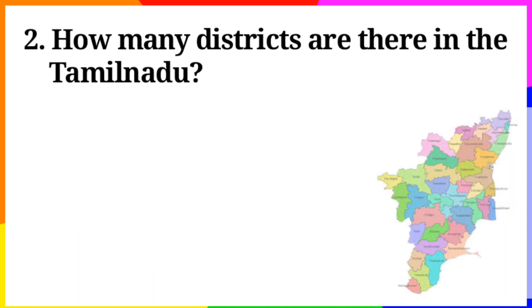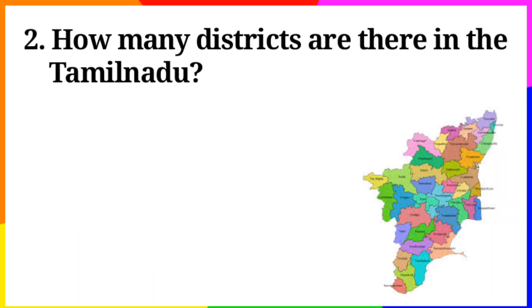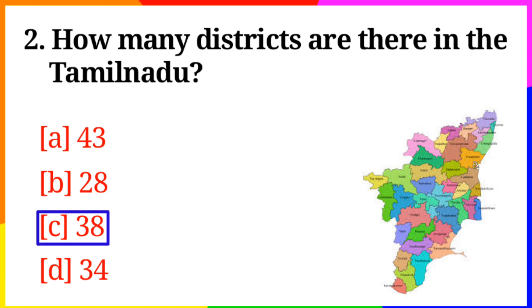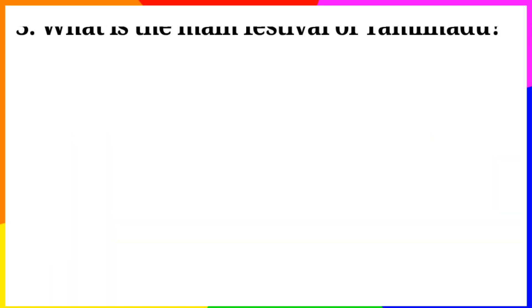Question No. 2: How many districts are there in Tamil Nadu? Option A: 43, B: 28, C: 38, D: 34. Answer is Option C: 38.